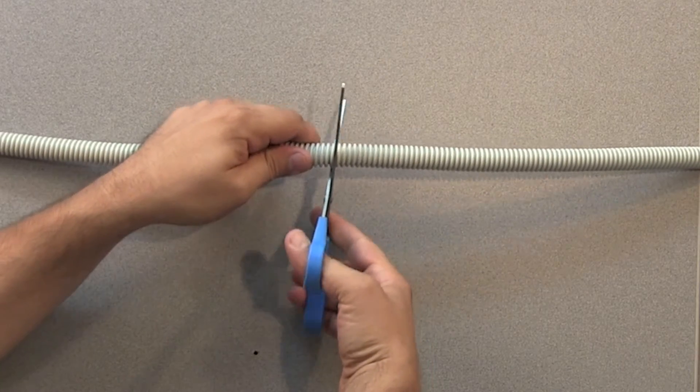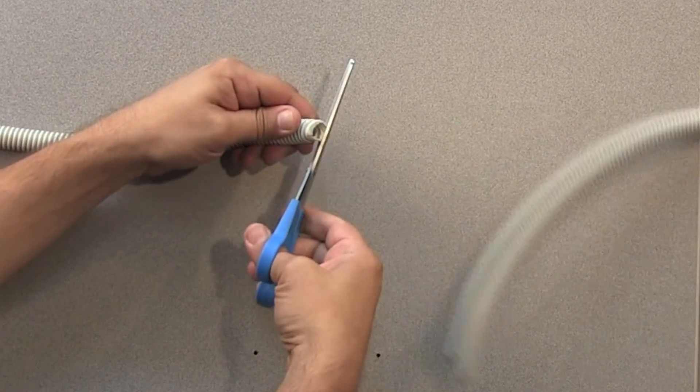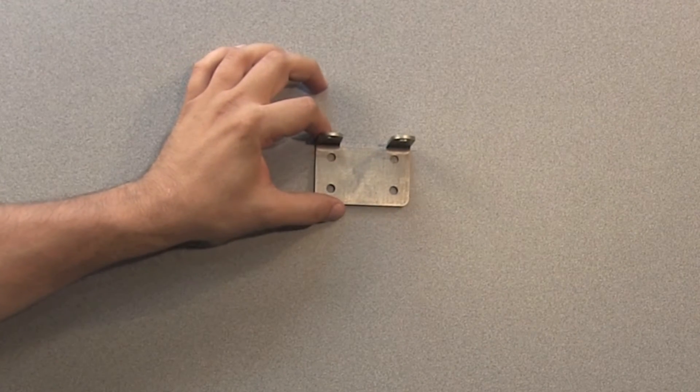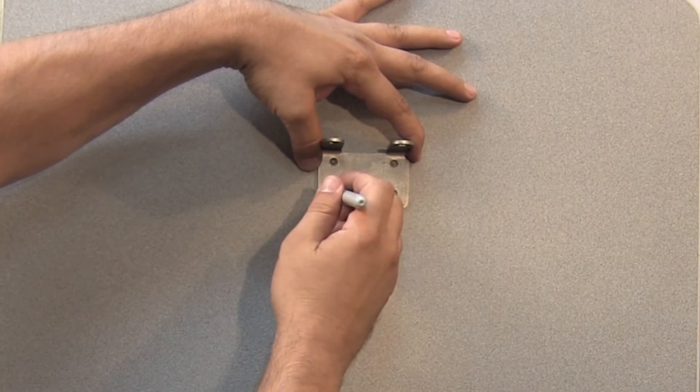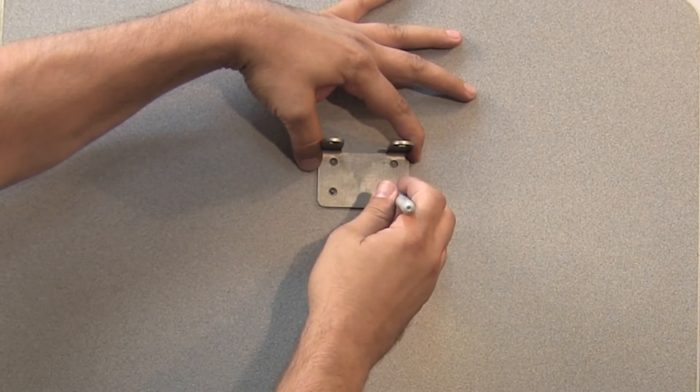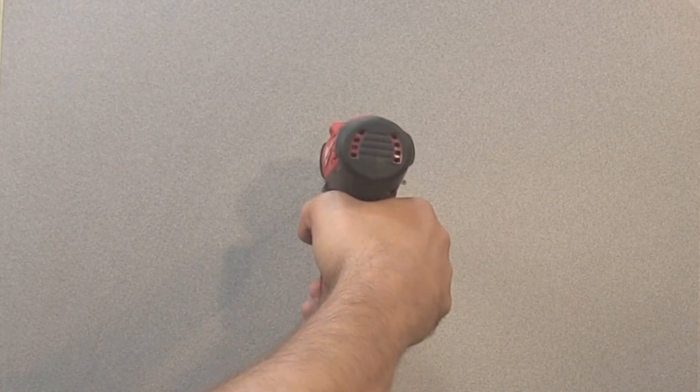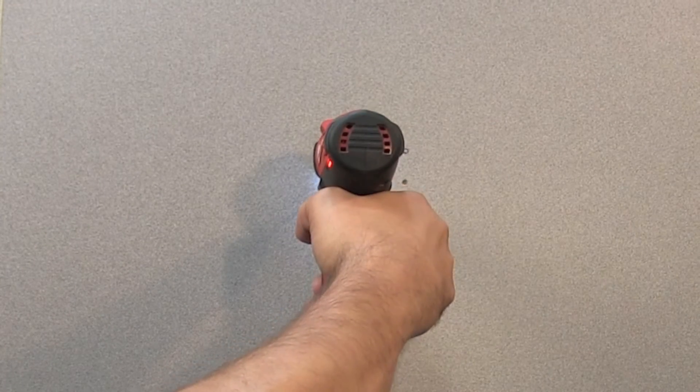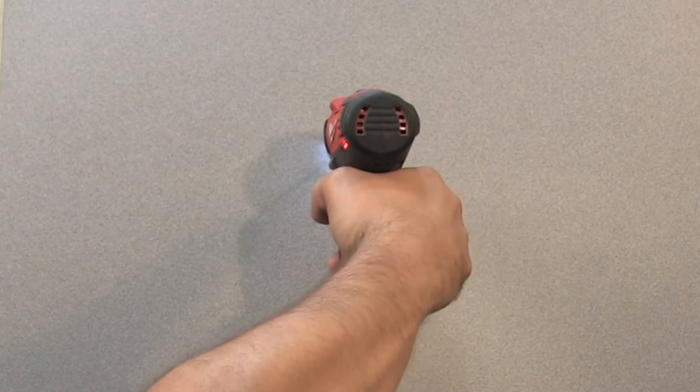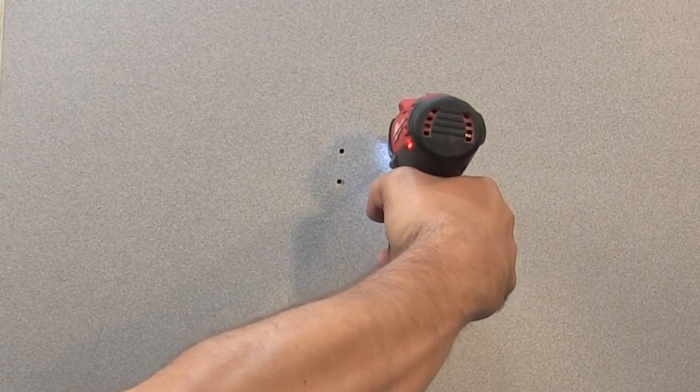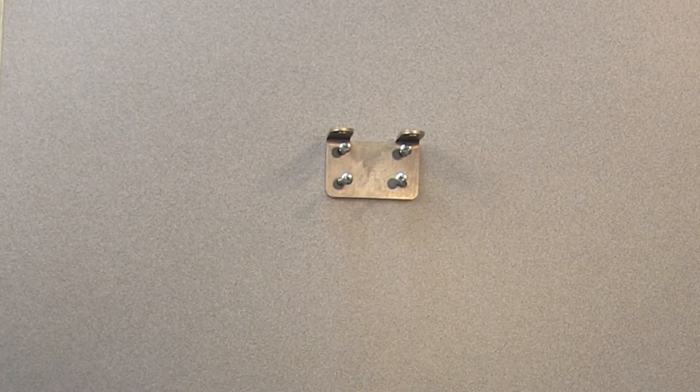We'll split the flexible vacuum tubing where we want to mount the manifold bracket. We'll grab the manifold mounting bracket and use it to mark the wall with a bracket screw hole pattern. We'll then drill where we mark to make it easier to screw in the bracket attachment screws. It's now time to attach the manifold mounting bracket to the wall.